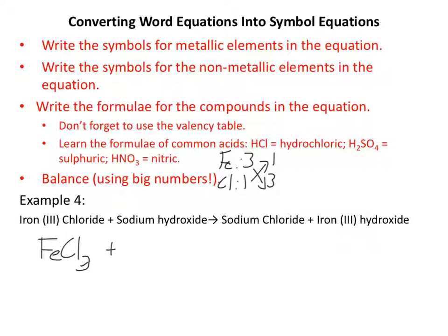Sodium hydroxide. Well, sodium has a valency of 1. Hydroxide has a valency of 1. They're both the same, so we just have one of each. So NaOH. Now sodium chloride. Sodium has a valency of 1. Chloride has a valency of 1, so that makes it NaCl. They're both the same.